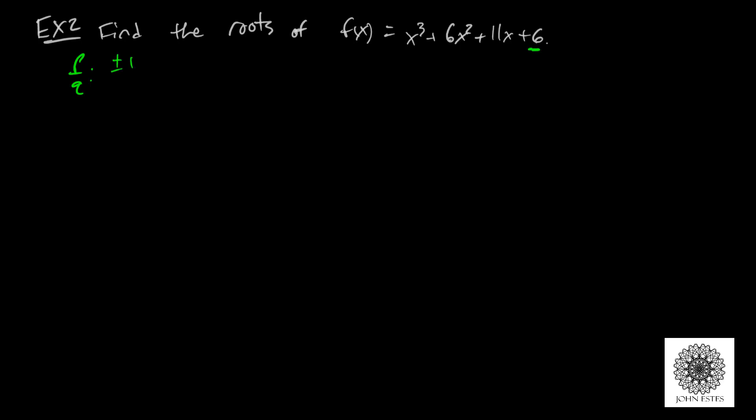So that's going to be plus or minus 1, plus or minus 2, 3, and 6. Those are the things that divide 6. The denominator q divides the leading coefficient. Since my leading coefficient is 1, that's just plus or minus 1. So the possible candidates to be roots look like this: negative 6, negative 3, negative 2, negative 1, and then the positive versions of those.